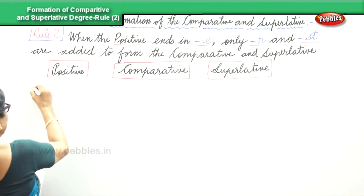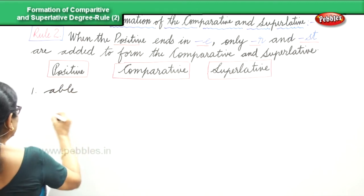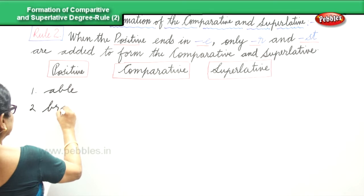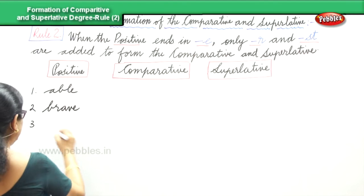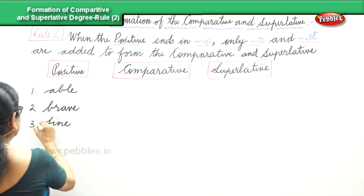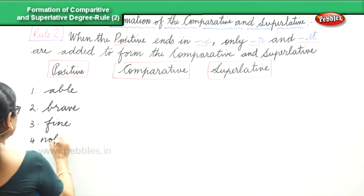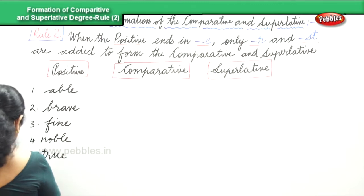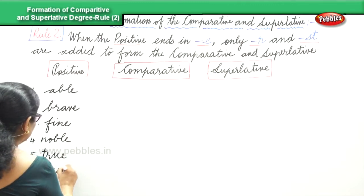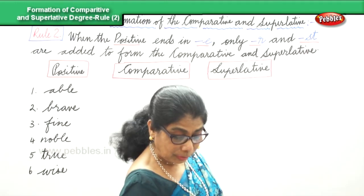Now let's look at the first one: ABLE, BRAVE, FINE, NOBLE, TRUE — all end in E. All the positives are ending in E. That's what we need to look at.